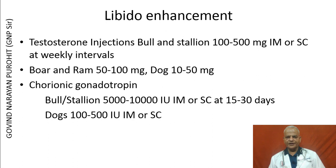A better option could be chorionic gonadotrophin. Administration of HCG to bulls or stallions can be done at 5,000 to 10,000 international units intramuscular or subcutaneously at 15 to 30 days interval. Dogs can receive 100 to 500 international units intramuscular or subcutaneous. However, libido enhancement cannot be guaranteed using these hormones, and one should also care about nutrition, management, exercise, and other factors. Herbal supplements such as Speman and Port can help in improving libido in bulls and stallions.